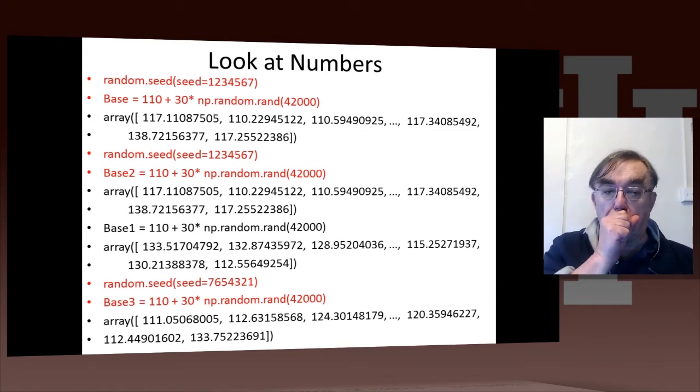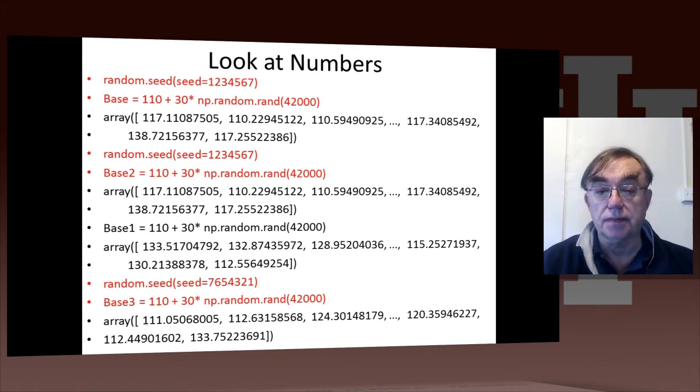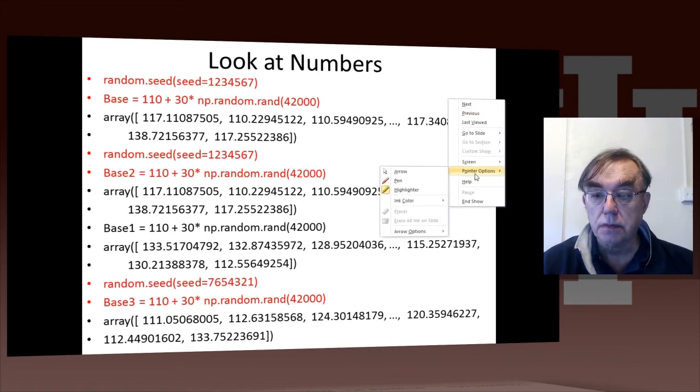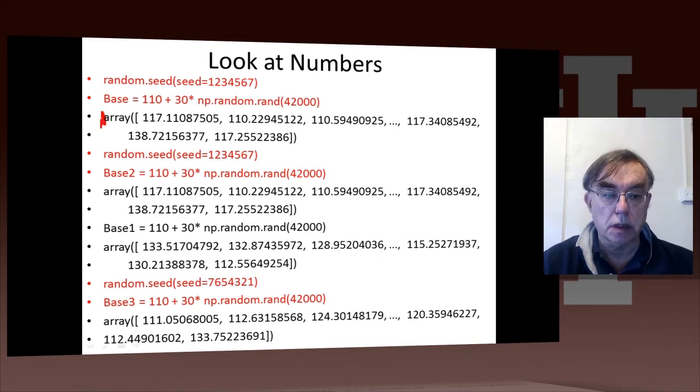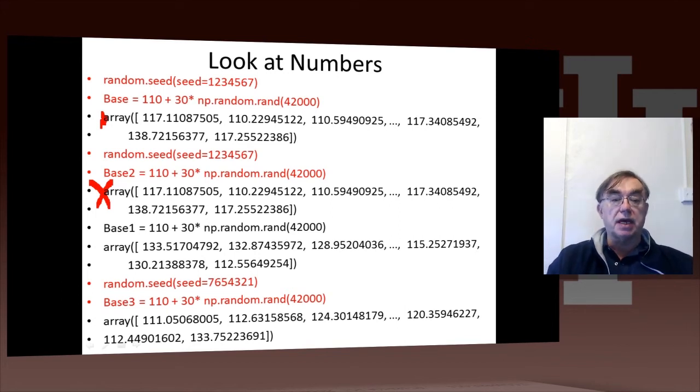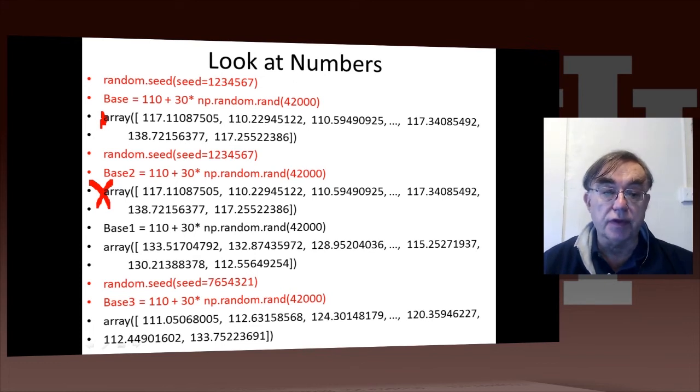This slide does a little bit more detail. It's the same as the previous slide, generating three different sets of random numbers, but it actually starts printing out the initial and final random numbers. You can see that the first number is 117.110087505, and then if we go to base2, it actually has the same seed as base and has the same value. So here in detail, we saw that previously with the actual histogram. Here we see it in detail in the numerical values of the random variables.